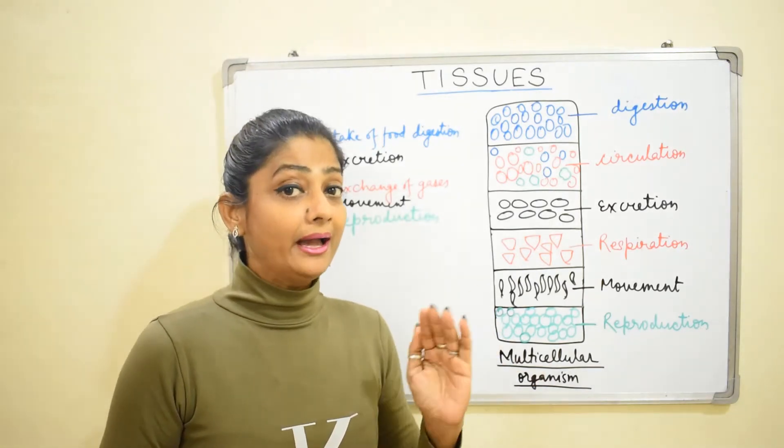Unicellular organisms have to do all the functions by themselves. As for example, they have to do the intake of food and digestion, excretion, exchange of gases, movement, and reproduction. So these single cells have to perform all the functions.